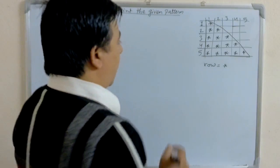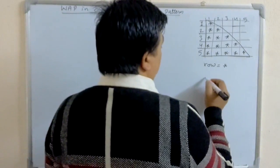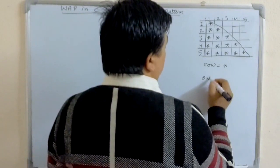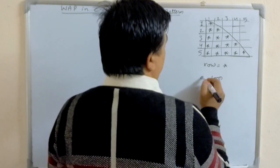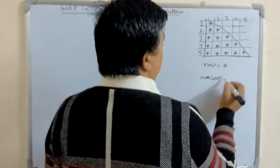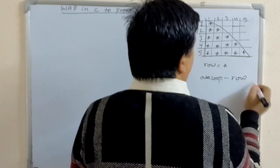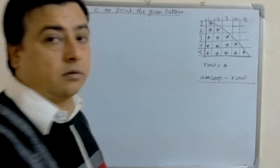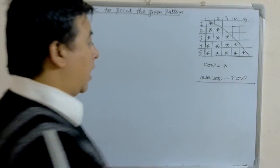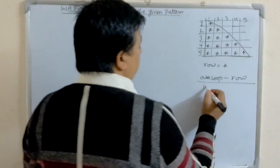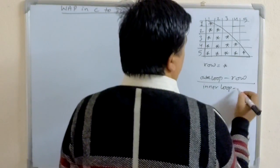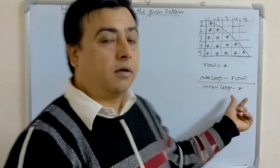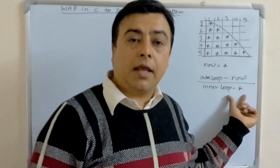So we have to use two loops: inner and outer loop. The outer loop controls how many rows we have to print. And the inner loop is used to print the asterisk signs — how many asterisks are printed is written in the inner loop.